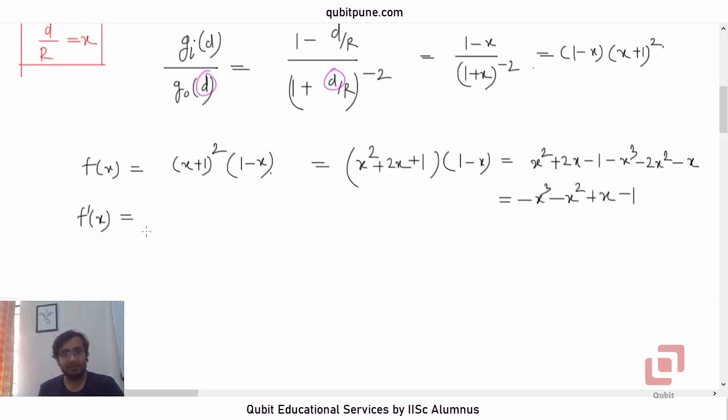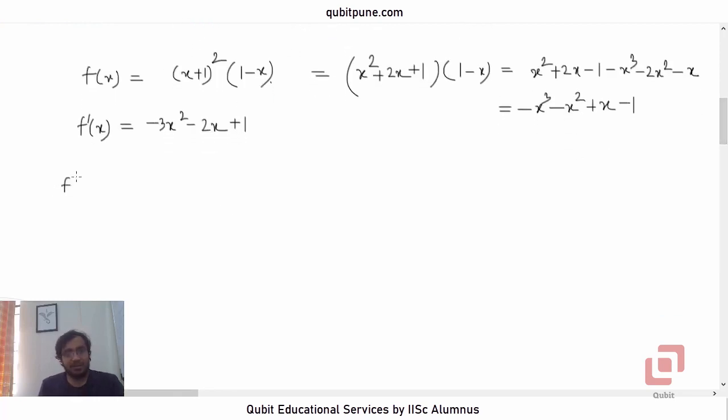Let us take the derivative now. That will be negative 3X squared minus 2X plus 1, and then this is 0. Let us equate the derivative to 0.